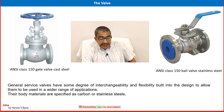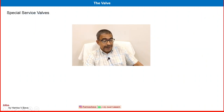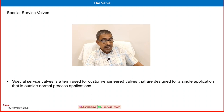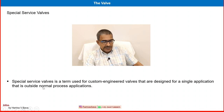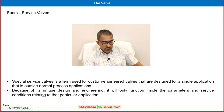One more valve type based on application classification: special service valves. Some services involve corrosive media, high pressure, flashing, or cavitation — in those cases a general service valve cannot be used, and that category is considered a special service valve. Special service valves are custom-engineered valves designed for a single application outside normal process applications. Because of their unique design and engineering, they only function within the parameters and service conditions of that particular application — not for general application.